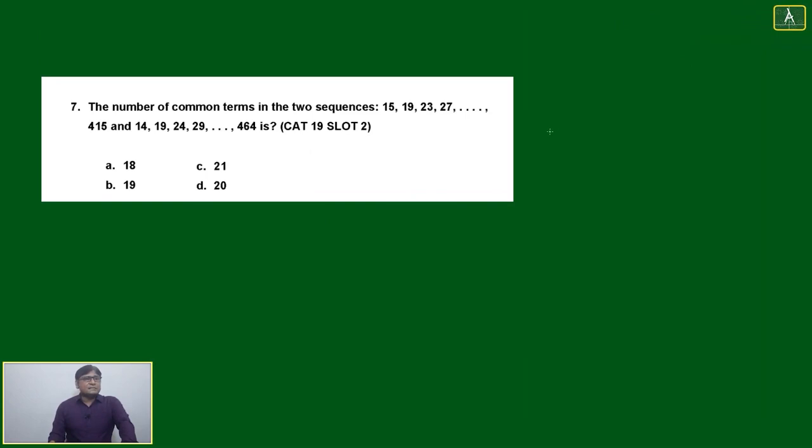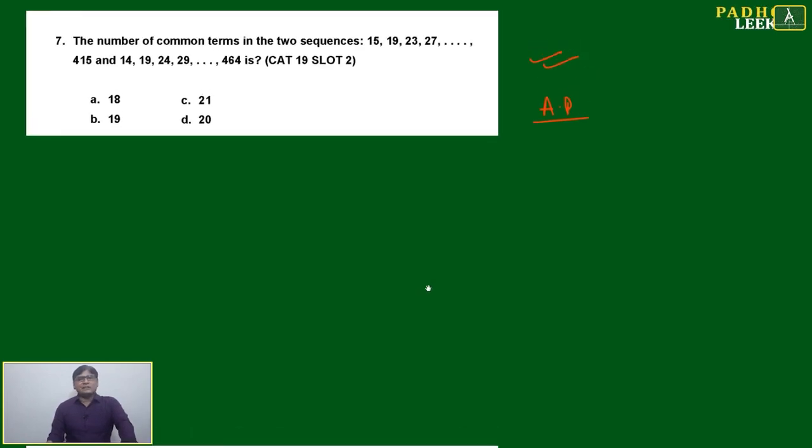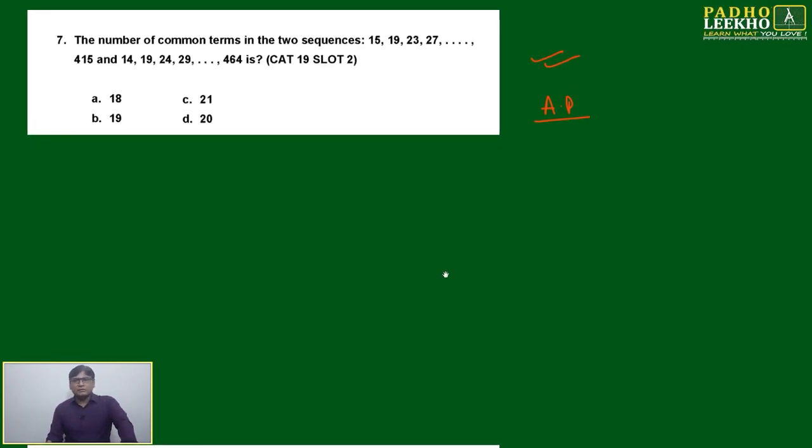Question number 6, 7. 7 is a very typical question. You can mark it very easily, just you will find one common term and just make the AP. Now you are expert for all these questions. In no circumstances will you be able to make it wrong. Even if you put heavy pressure, this type of question you will make correct only.